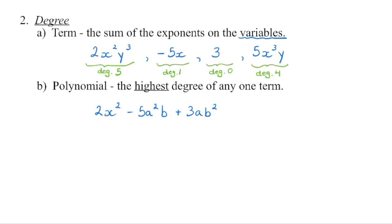If we have a polynomial, we need to take the highest degree of any one term. This particular term has a degree of 2, this term has a degree of 2 plus 1, which is 3, and this term has a degree of 1 plus 2, which is also 3. So the highest degree is 3, making that entire polynomial a degree 3 polynomial.